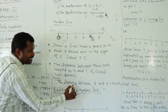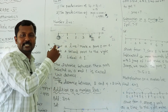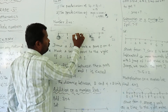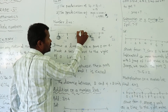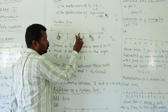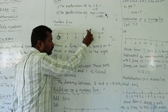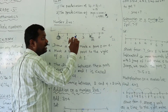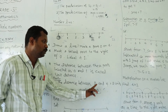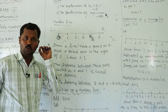For example, what is the distance between 2 and 4? We move: 2 to 3 is 1 unit, and 3 to 4 is 1 unit. So the distance between 2 and 4 is equal to 2 units.